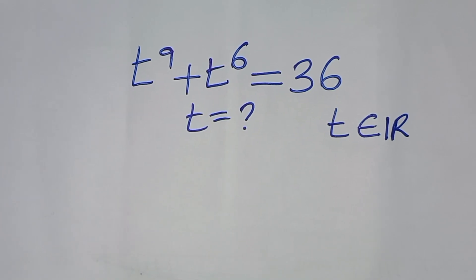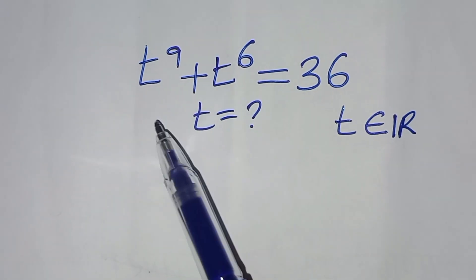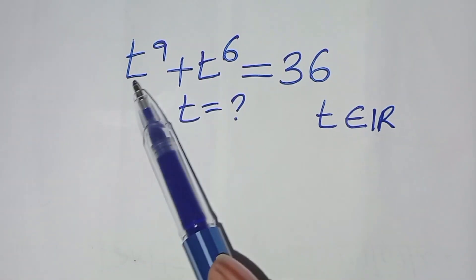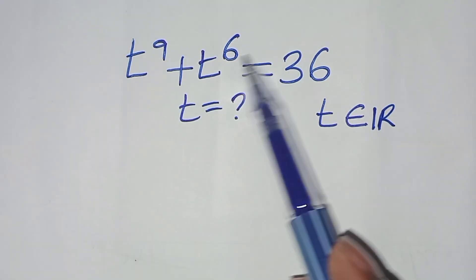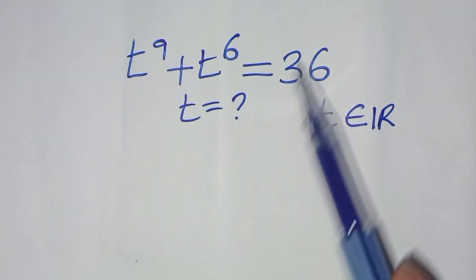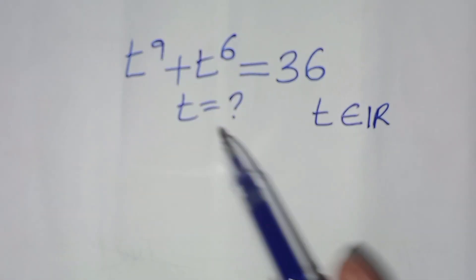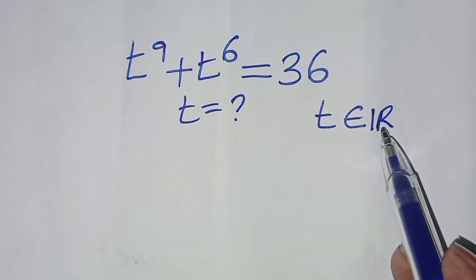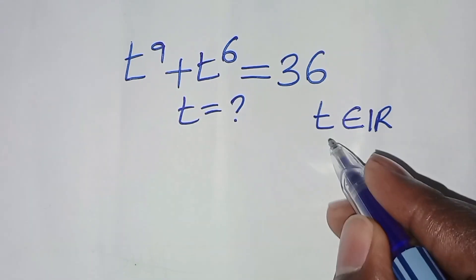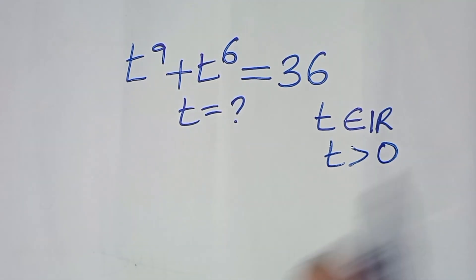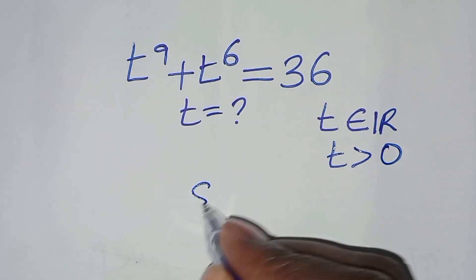Hello everyone, you are welcome to solve this nice algebra problem, which is t to the power 9 plus t to the power 6, this is equal to 36. What is the value of t? Given that t is a member of real numbers and that t is greater than 0, now let's get the solution here.